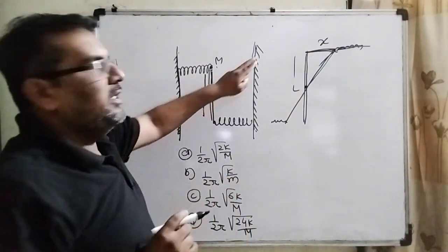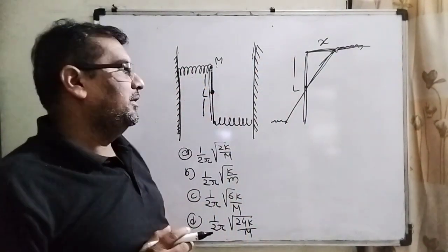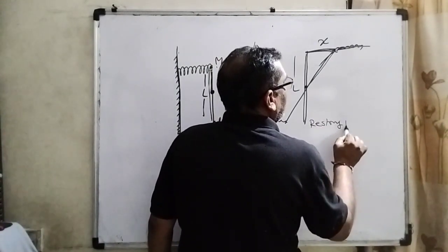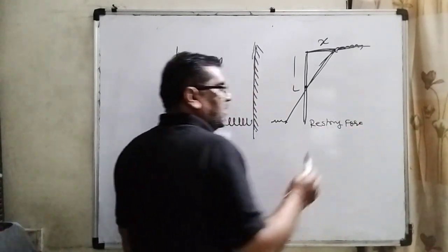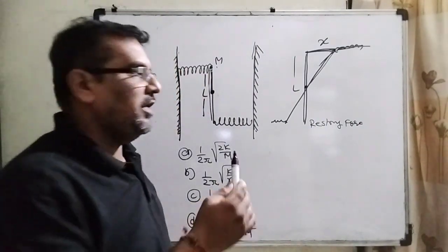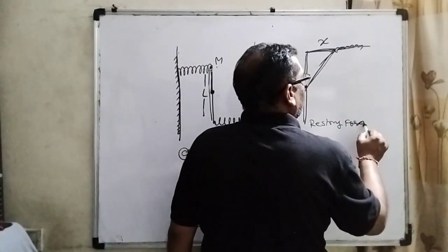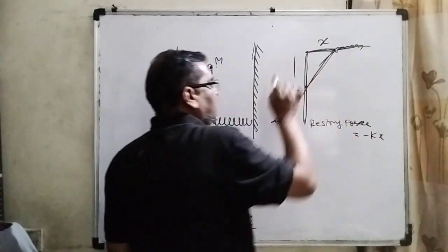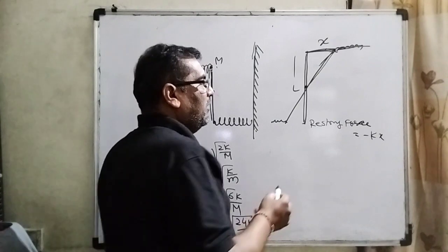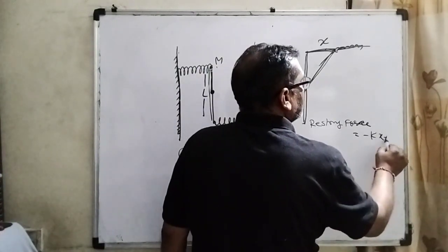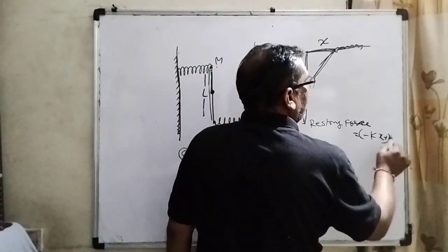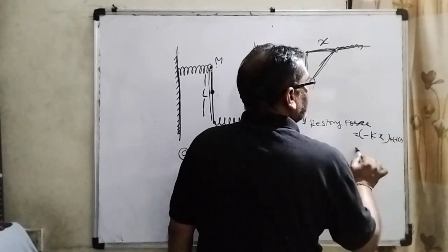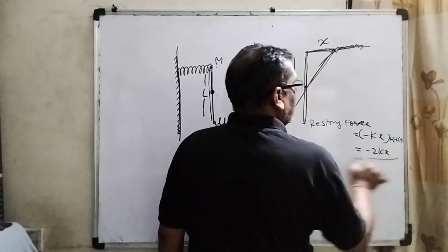A restoring force is generated, and as you know its direction is opposite to the displacement. So the restoring force from one end is −Kx, and from the other end is also −Kx. Therefore, the total restoring force is −2Kx.